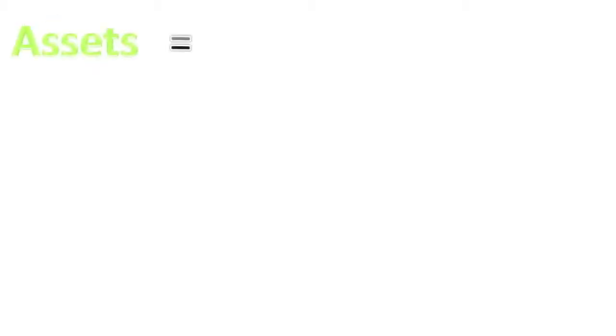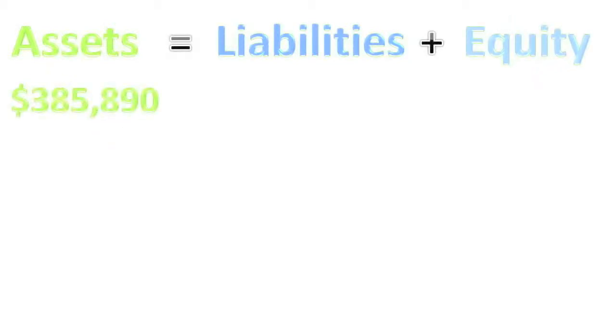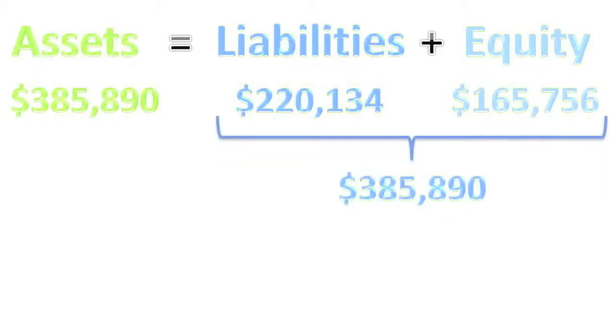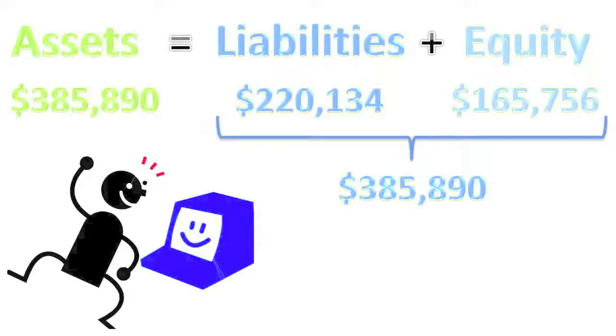Let's step back and look at that balance sheet from the most fundamental level, which is the balance sheet equation, which I introduced in the very first video of this course. Assets equal liabilities plus equity. Total assets $385,890 equals liabilities $220,134 and equity $165,756. Those added together give us $385,890, and we are in balance.